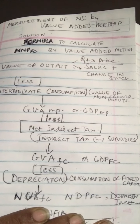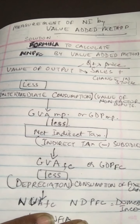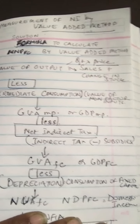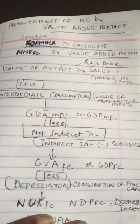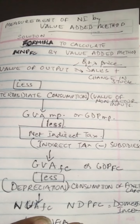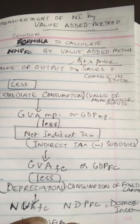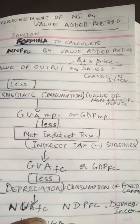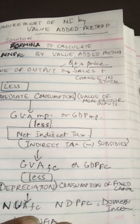If we want to go to the net aggregate — that is Net Value Added at factor cost — we deduct from the gross: depreciation, or consumption of fixed capital. Once we do that, we get what is known as domestic income, that is NDP FC — Net Domestic Product at factor cost. To this, if we add net factor income from abroad, what we get is national income.